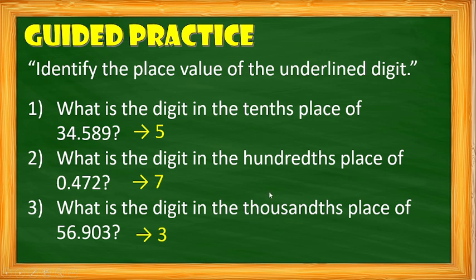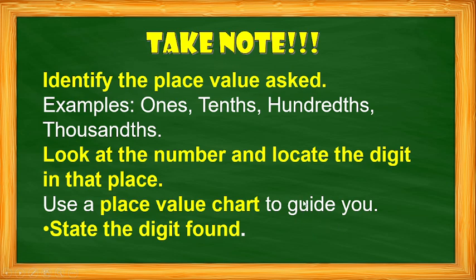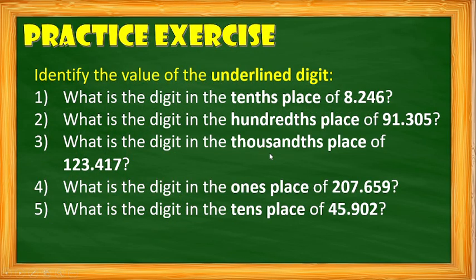I hope you already know how to find the digit given its place value. Take note: to identify the place value, use ones, tenths, hundredths, and thousandths. Try to find the place value using the place value chart. Look at the number and locate the digit in the place value chart to guide you, then state the digit you found. To further enhance your skills, try to practice and identify the value of the underlined digit, or find the digit using its place value. Comment your answer in the comment section below.